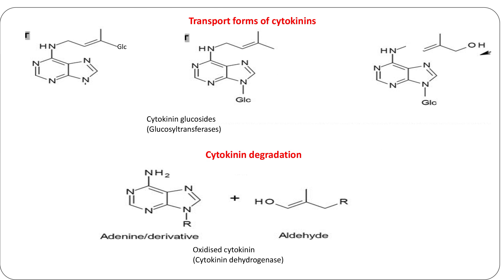Cytokinins are converted to glucose conjugates by the activity of N-glucosyltransferases or O-glucosyltransferases. The sugar derivatives are inactive and constitute the main transport forms for this hormone. Permanent degradation of cytokinins is brought about by a dehydrogenase which separates the isopentyl side chain from adenine.